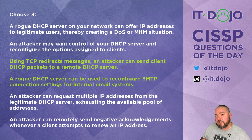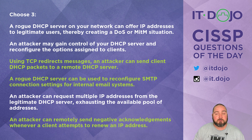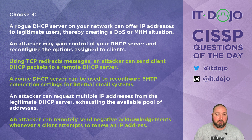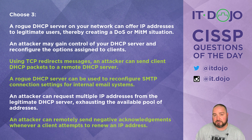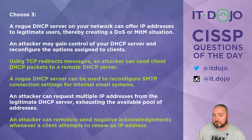The last option says an attacker can remotely send negative acknowledgements when a user on a LAN segment tries to renew their IP address. This is not possible — the only way to spoof a negative acknowledgement is to be on-link, meaning you must control a computer on the same network segment. You cannot sit on a remote network and spoof negative acknowledgements against a DHCP renewal on a local network. So that is not a legitimate concern, making it the third correct answer.